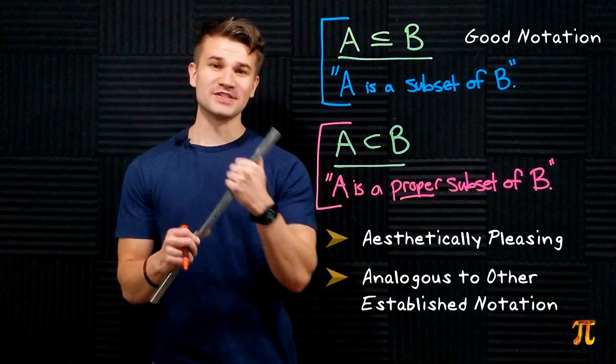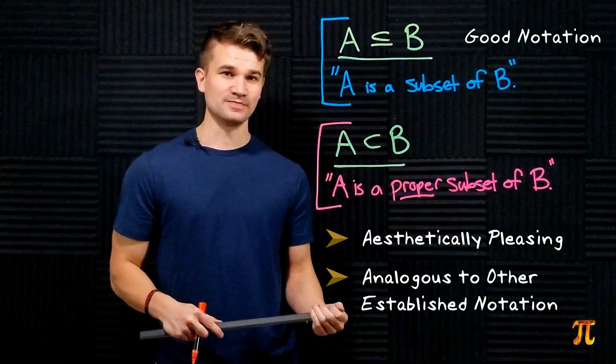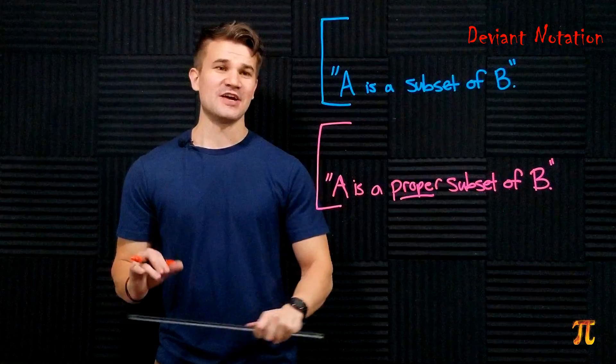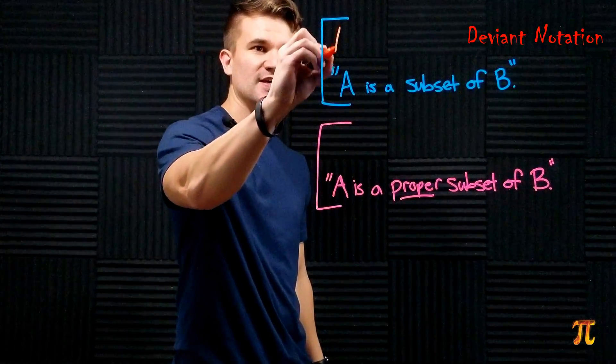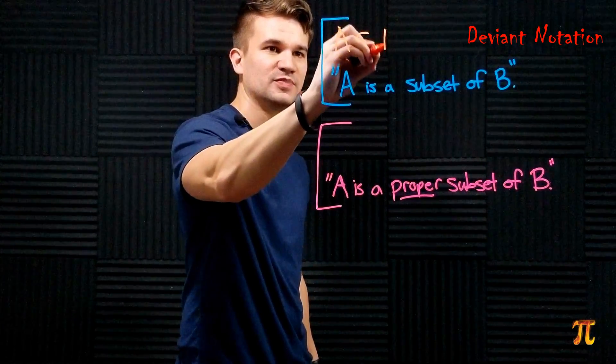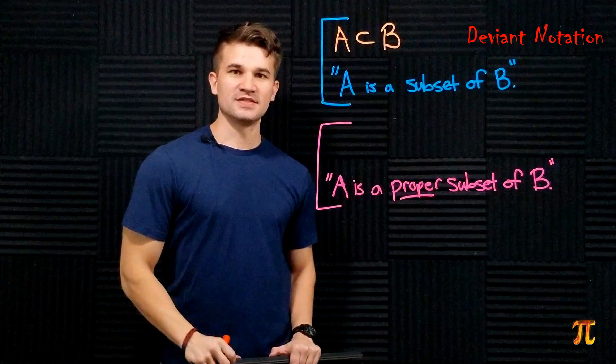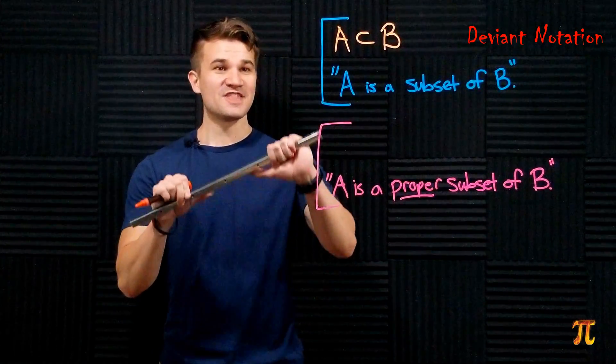There's an alternative notational practice for subset and proper subset. I call it the deviant notation. This is how it looks: if we have that A is a subset of B, we will write this A subset of B. Notice that the symbol for subset is the former symbol for proper subset.